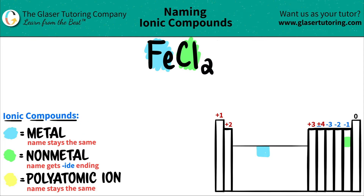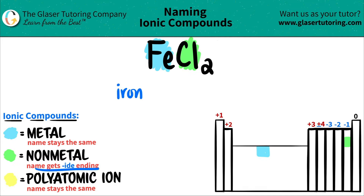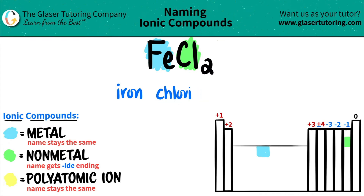The metal name comes first and that name always stays exactly the same. So Fe is just iron. The non-metal always gets the -IDE ending. So it was chlorine, but now I have to turn it into the -IDE ending — so it'd be chloride. You kind of drop the -NE and you add -DE.